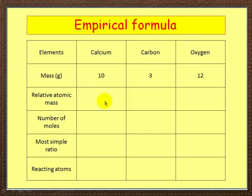Put in here, relative atomic mass, 40, 12, 16. Where have they come from? The periodic table, remember? The number of moles is this figure divided by this, this divided by this, and this divided by this. So divide those and you get 0.25, 0.25, 0.75.